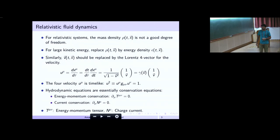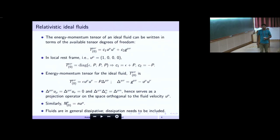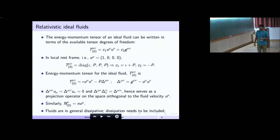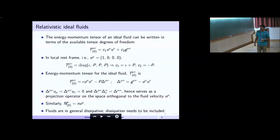The hydrodynamic equations are essentially just the conservation equations of energy-momentum and conserved currents. T^μν is the energy-momentum tensor and N^μ is the charge current. For ideal hydro, we construct the energy-momentum tensor using one vector and a metric tensor with unknown coefficients, determined by going to the local rest frame of the fluid. These coefficients turn out to be energy density and pressure. We introduce a projection operator Δ^μν orthogonal to the fluid velocity, and similarly obtain the ideal conserved charge current.